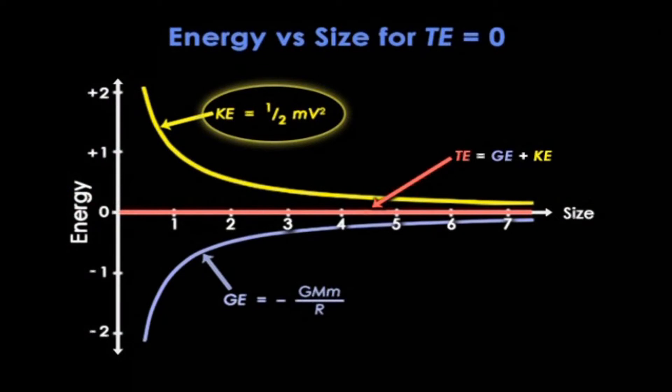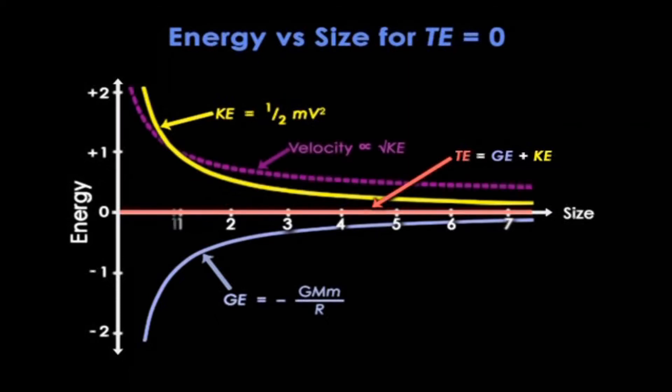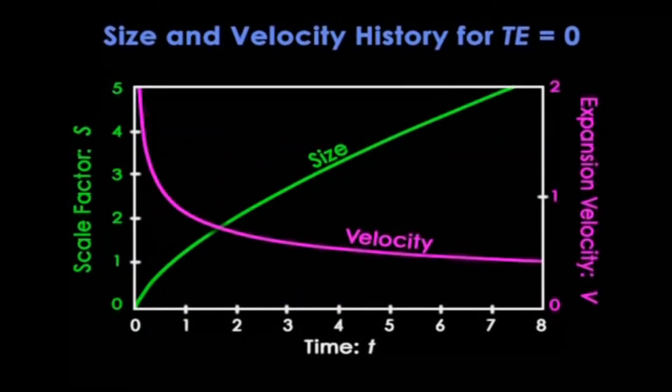Now so far so good. But now we need to go from these energy curves to the size history curve S of T. Now the first step is actually easy. Since kinetic energy is 1/2 mv², then taking its square root gives the rock's velocity. Now that's the purple dashed line. It drops just as you'd expect. Now the second step uses this purple curve, which tells us how fast the rock moves to the right, and a little bit of math I don't have time for to get to these two curves.